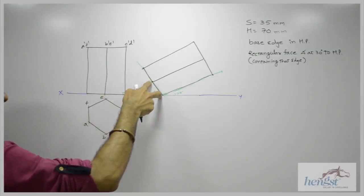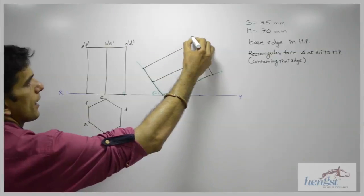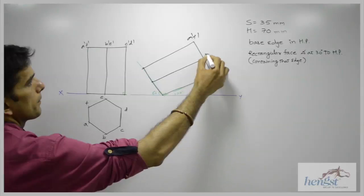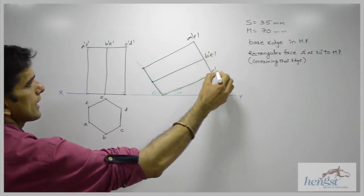See, take this and cut it on this side. So this is a dash, f dash, b dash, e dash, c dash, d dash.